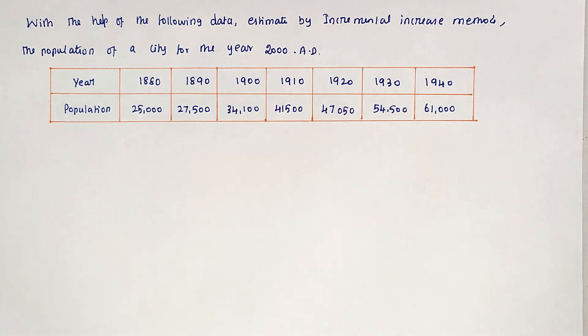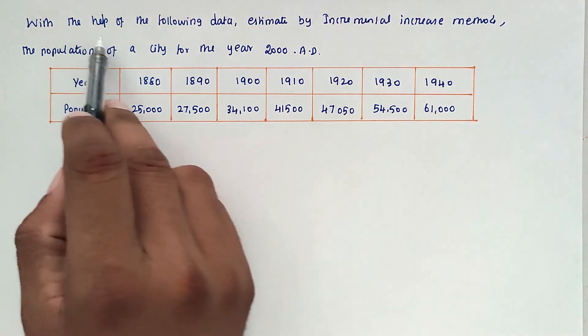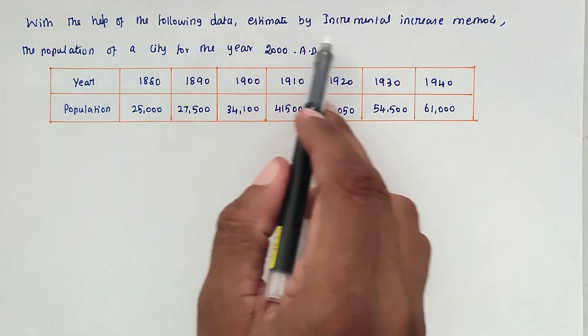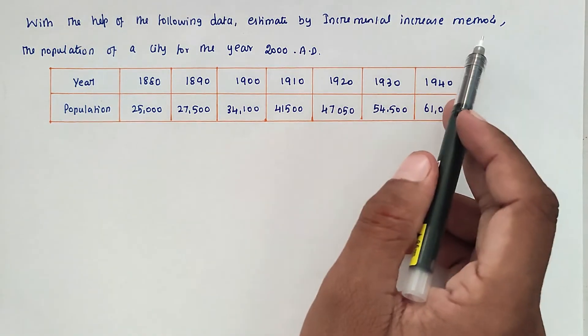Hello friends, welcome to Civil Engineering Exam. Today we're going to see a problem related to environmental engineering, specifically the topic of population growth. The problem is: with the help of the following data, estimate by the incremental increase method the population of the city for the year 2000.